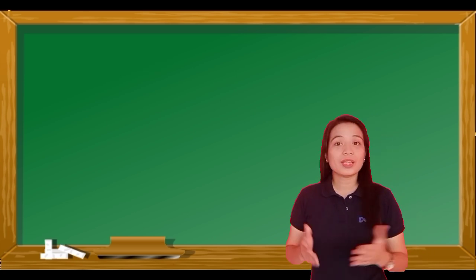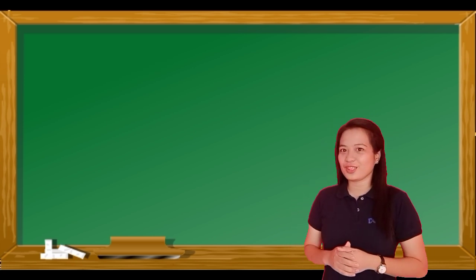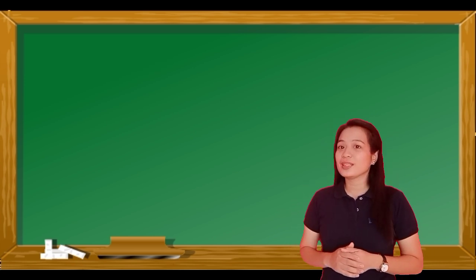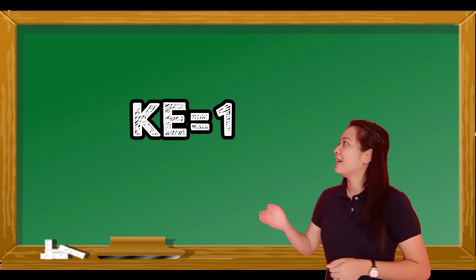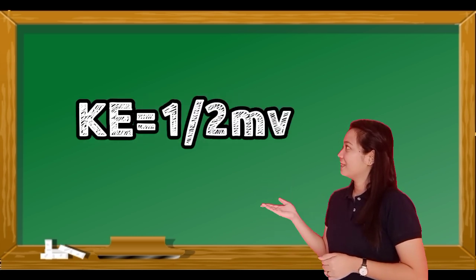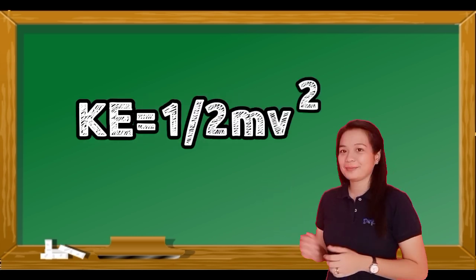We can also calculate kinetic energy using this formula: KE is equal to one half of mass times velocity squared.